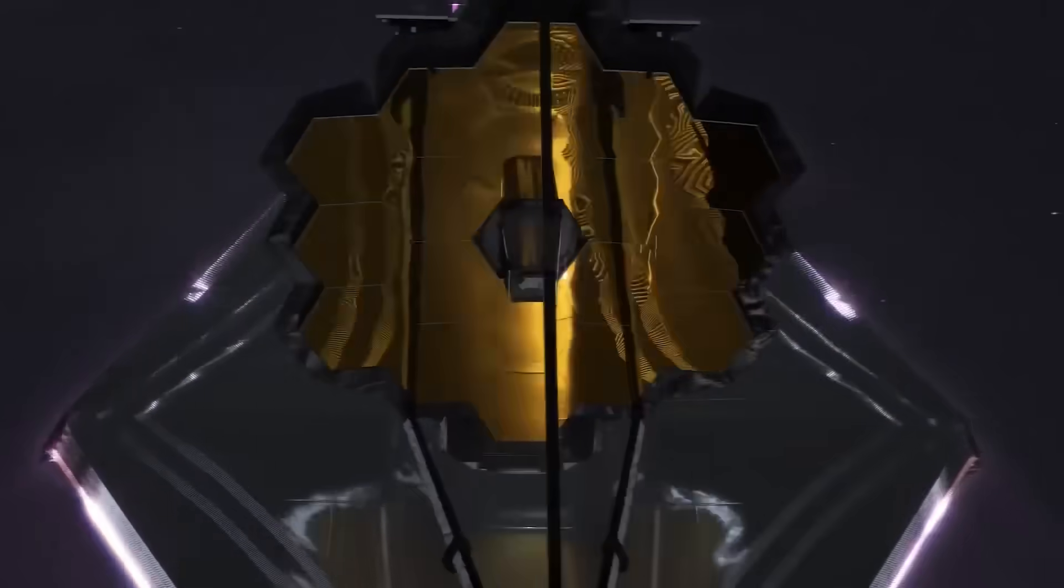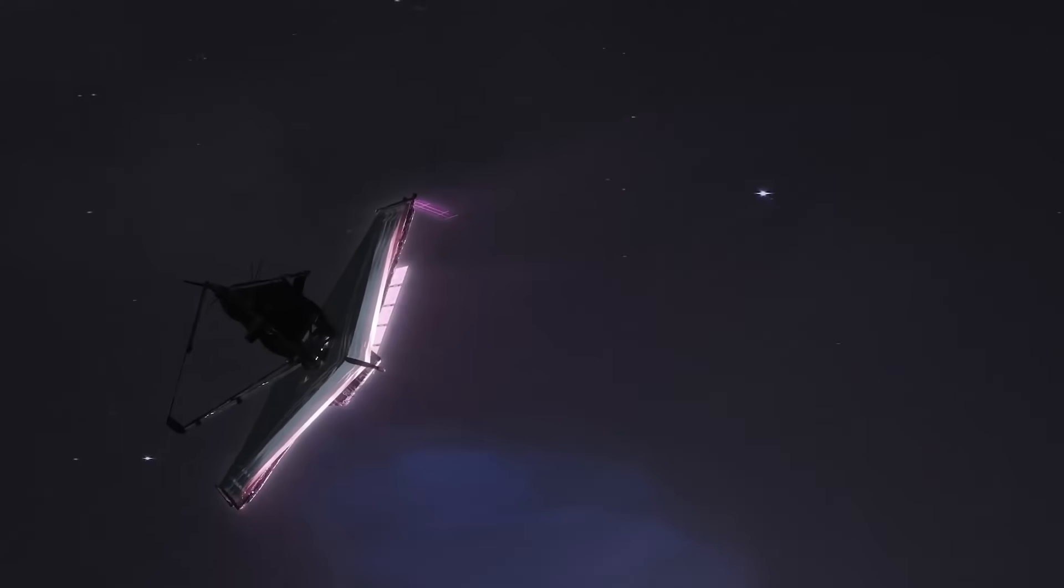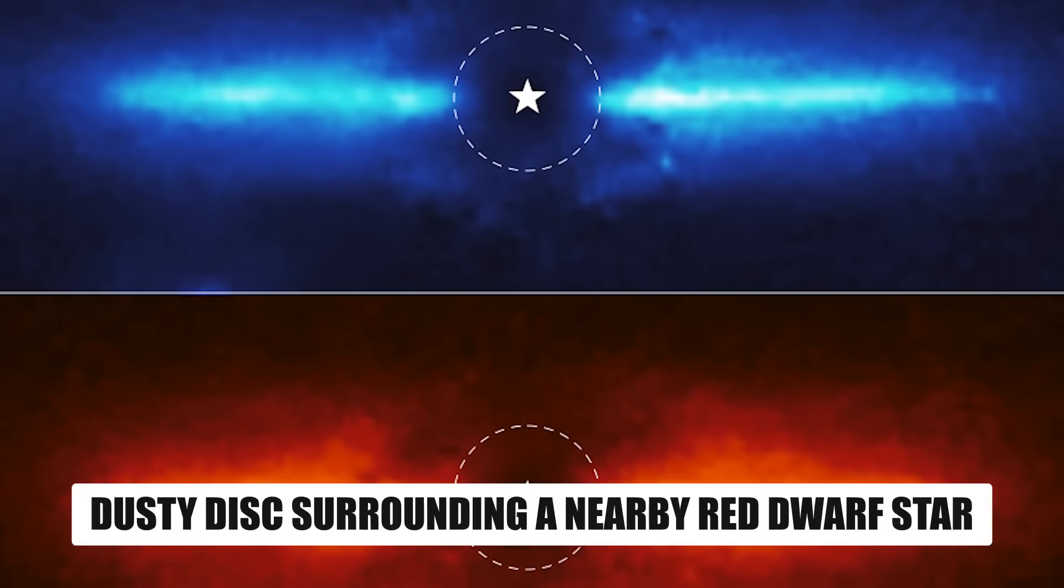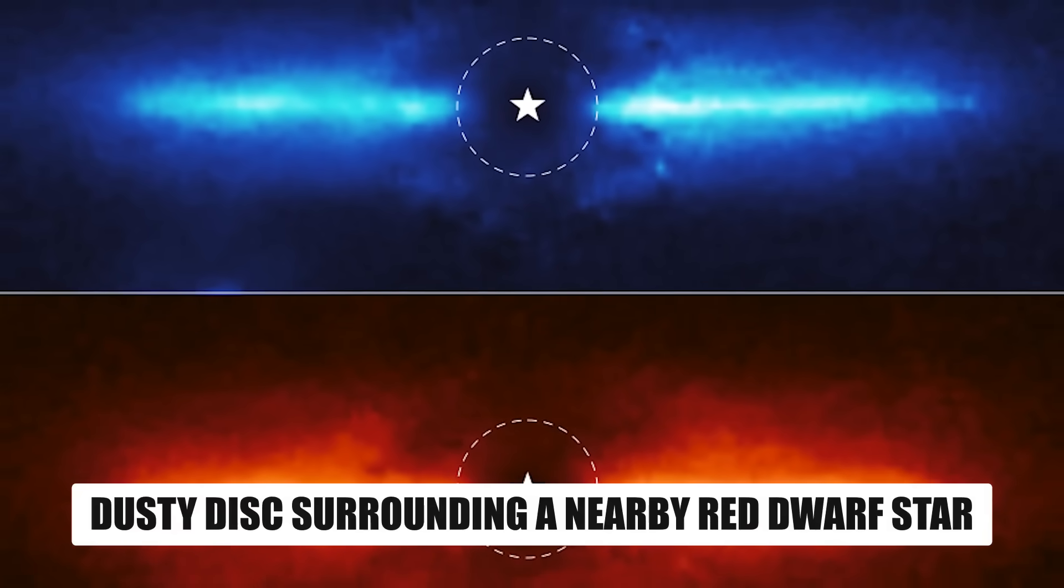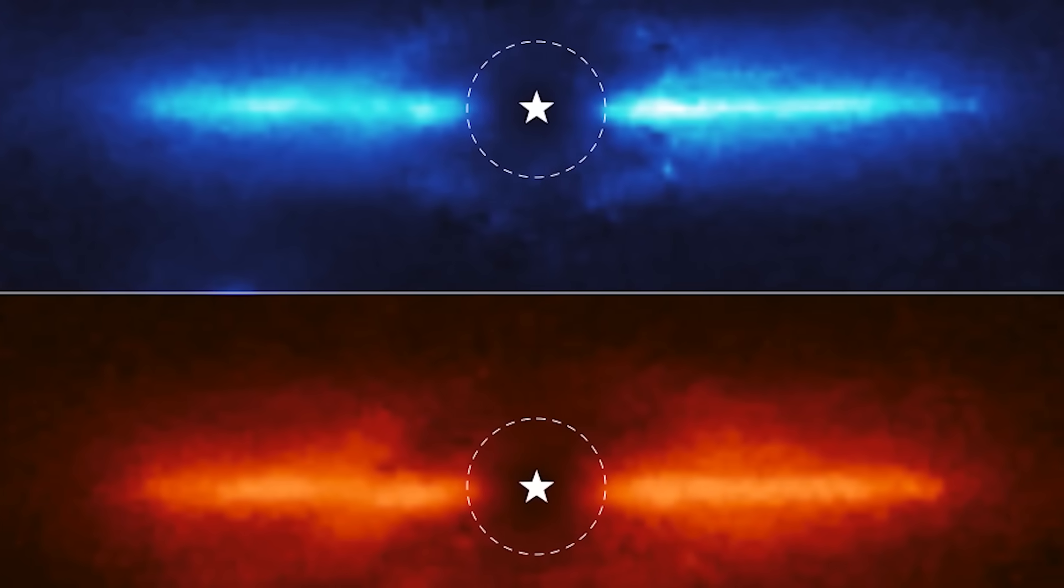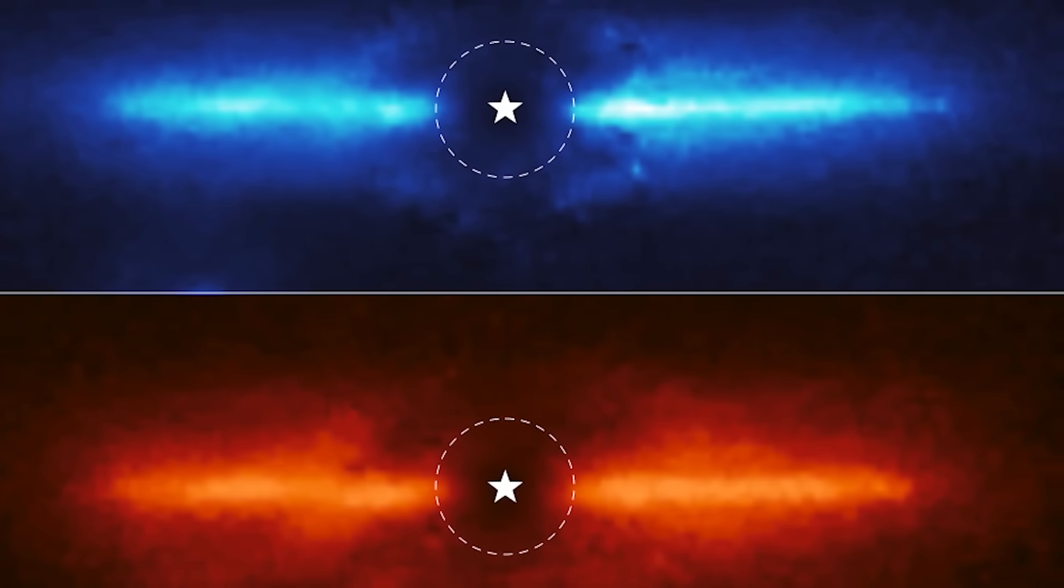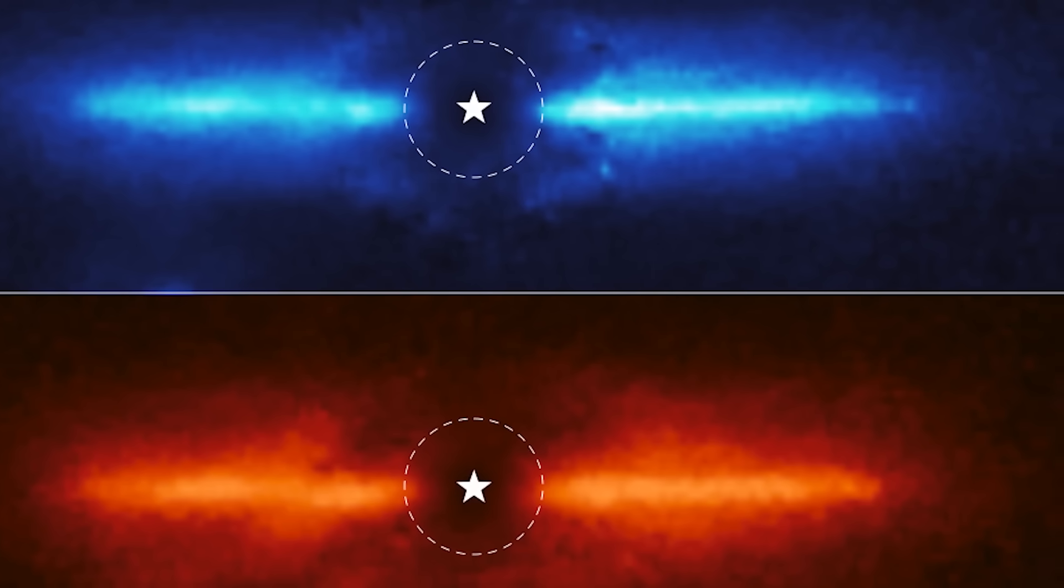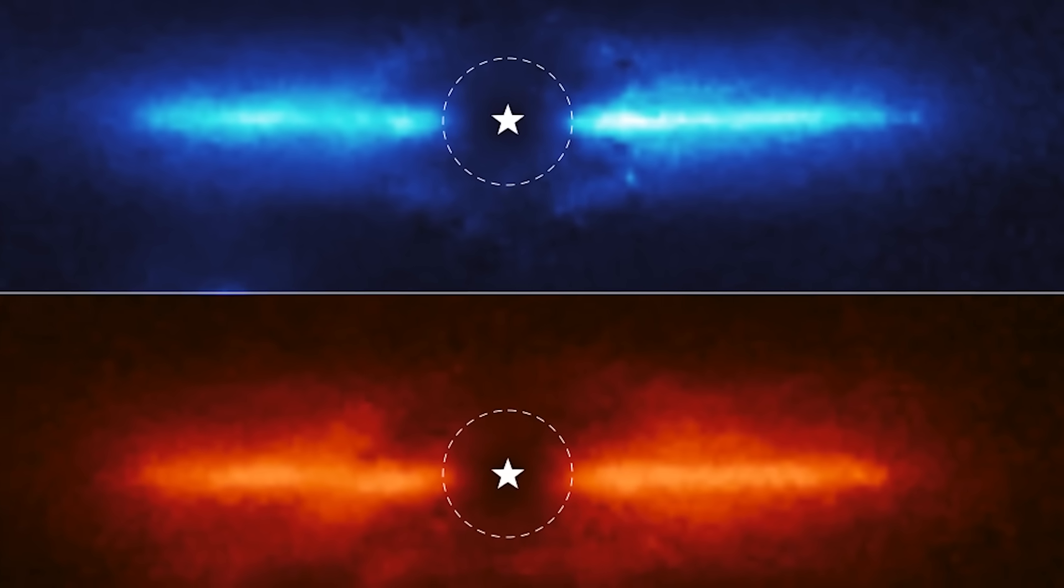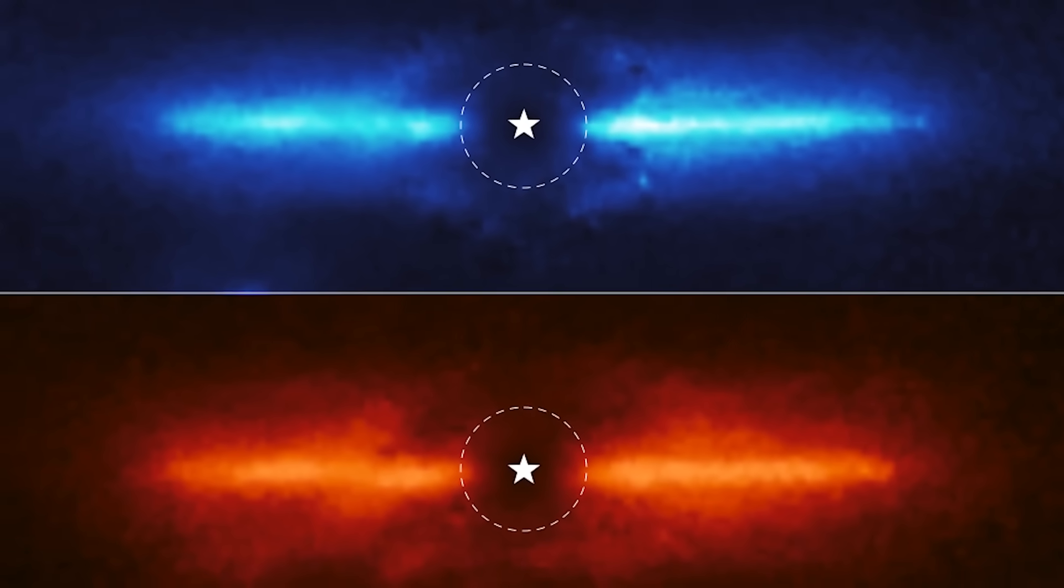The James Webb Space Telescope continued to make incredible discoveries, such as capturing images of the interior of a dusty disk surrounding a nearby red dwarf star. This provided valuable information about the disk's composition, helping astronomers better understand the process of planet formation. By observing the disk at these previously unattainable infrared wavelengths, the researchers were able to glean crucial details about its makeup.